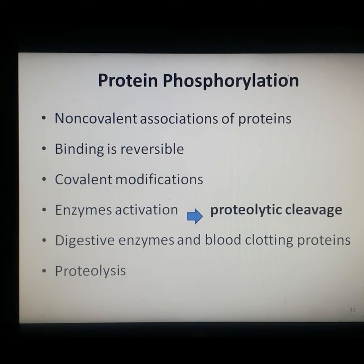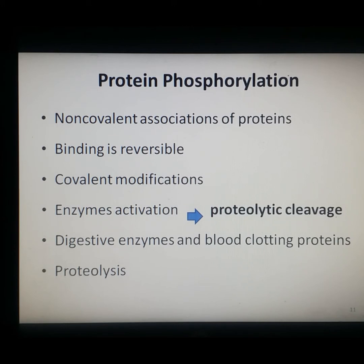The next mechanism is protein phosphorylation. The examples discussed previously involved non-covalent association of proteins with small molecule inhibitors or activators, where no covalent bonds were formed, making binding readily reversible and allowing the cell to respond rapidly to environmental changes. On the other hand, activity of many proteins is also regulated by covalent modification, one example being the activation of some enzymes by proteolytic cleavage of inactive precursors. Proteolysis is the breakdown of protein into smaller polypeptides or amino acids.